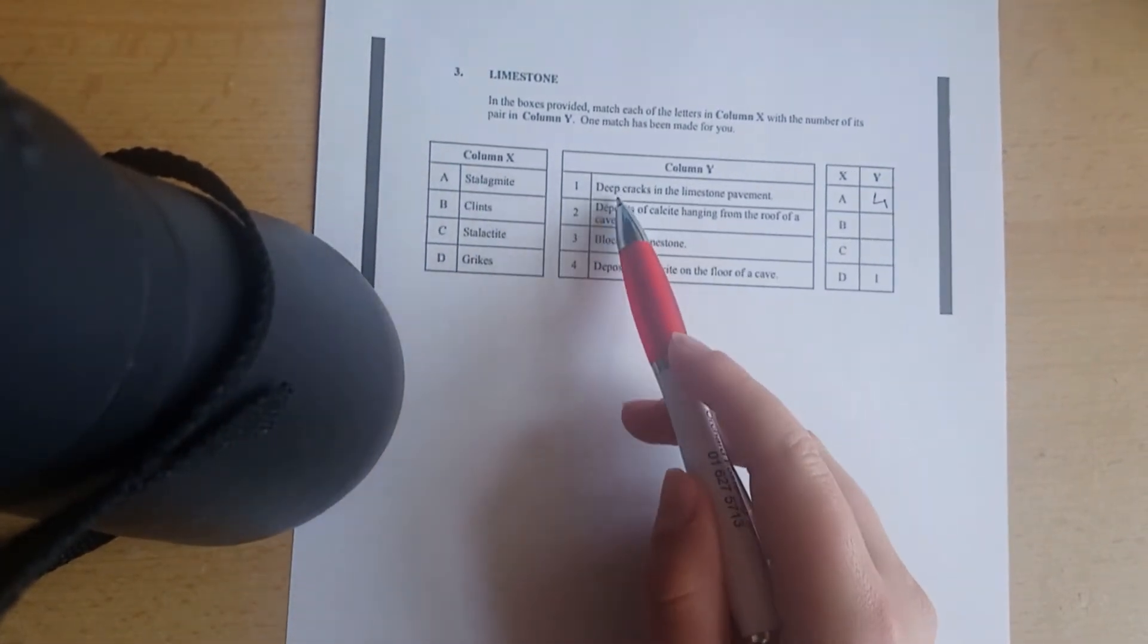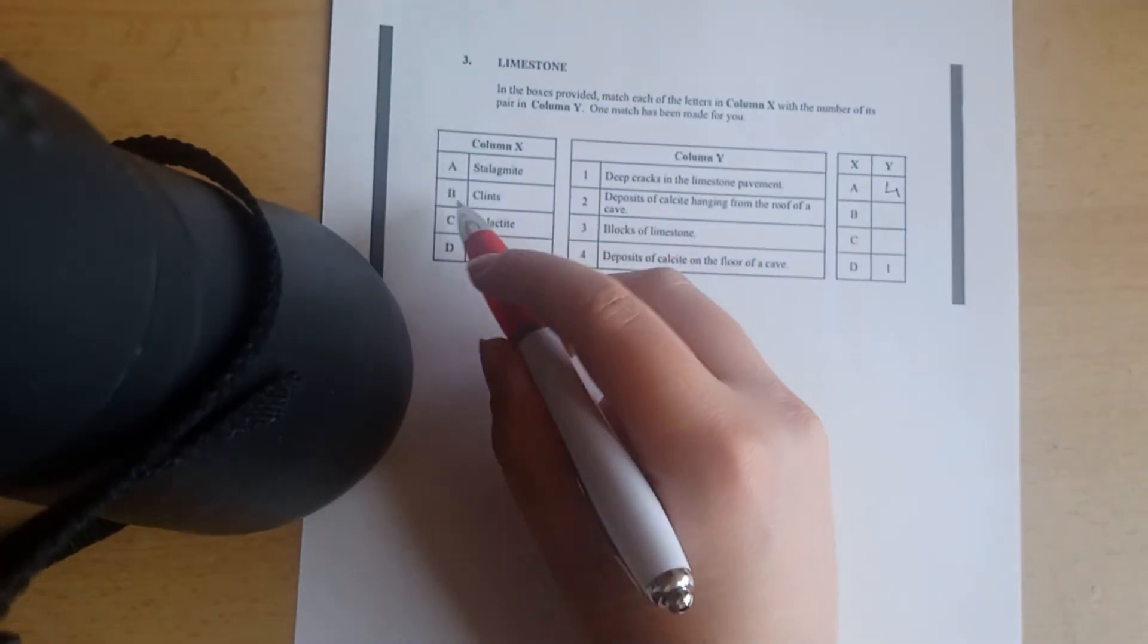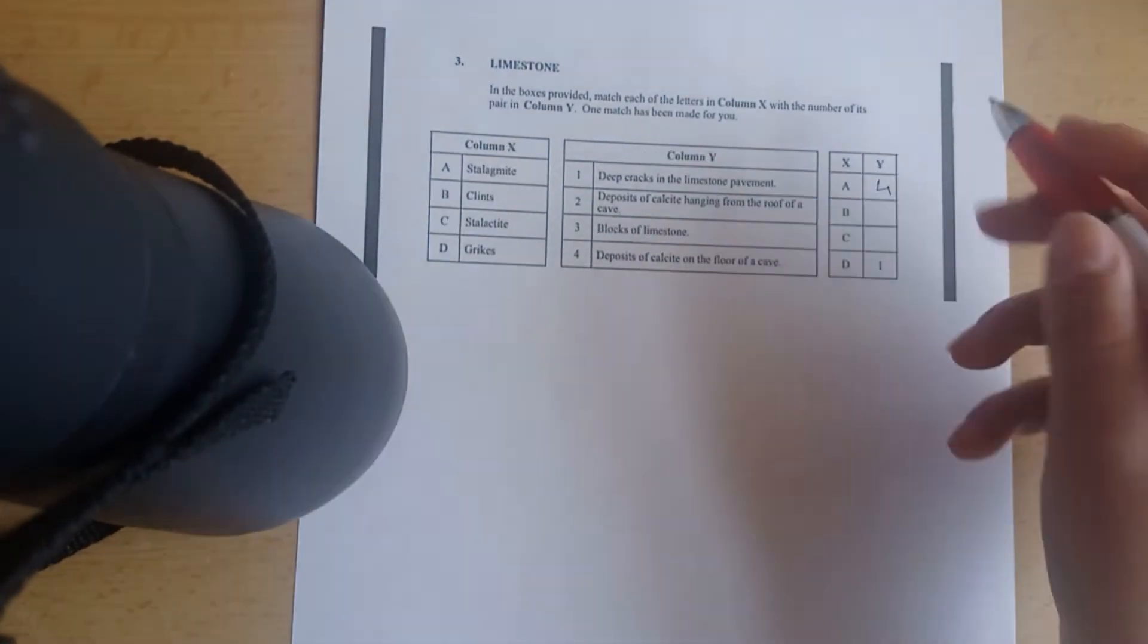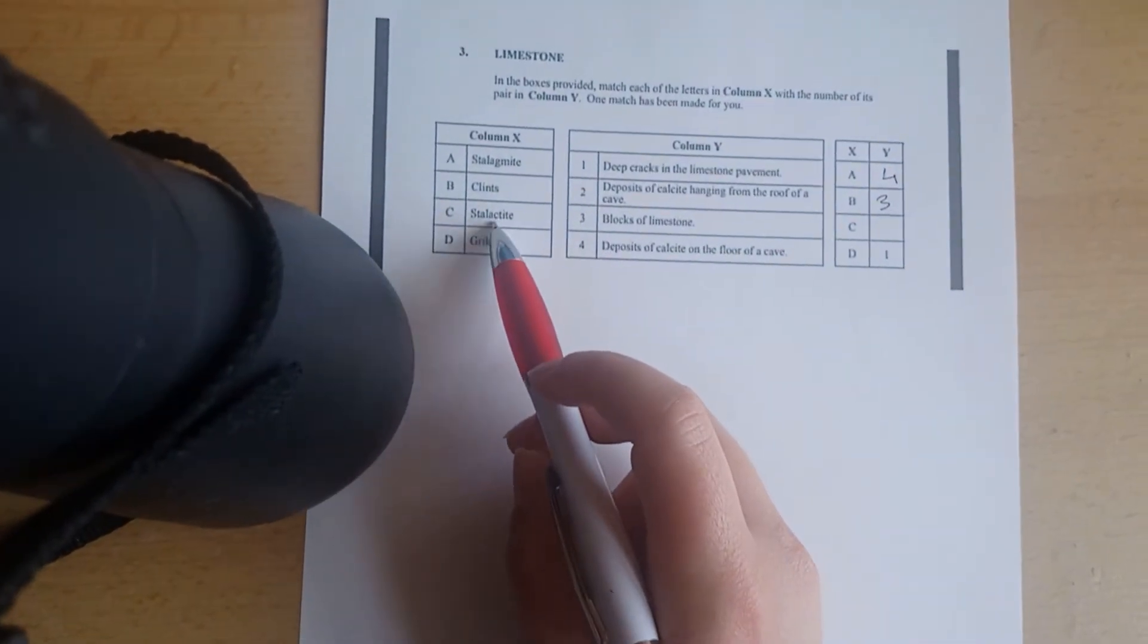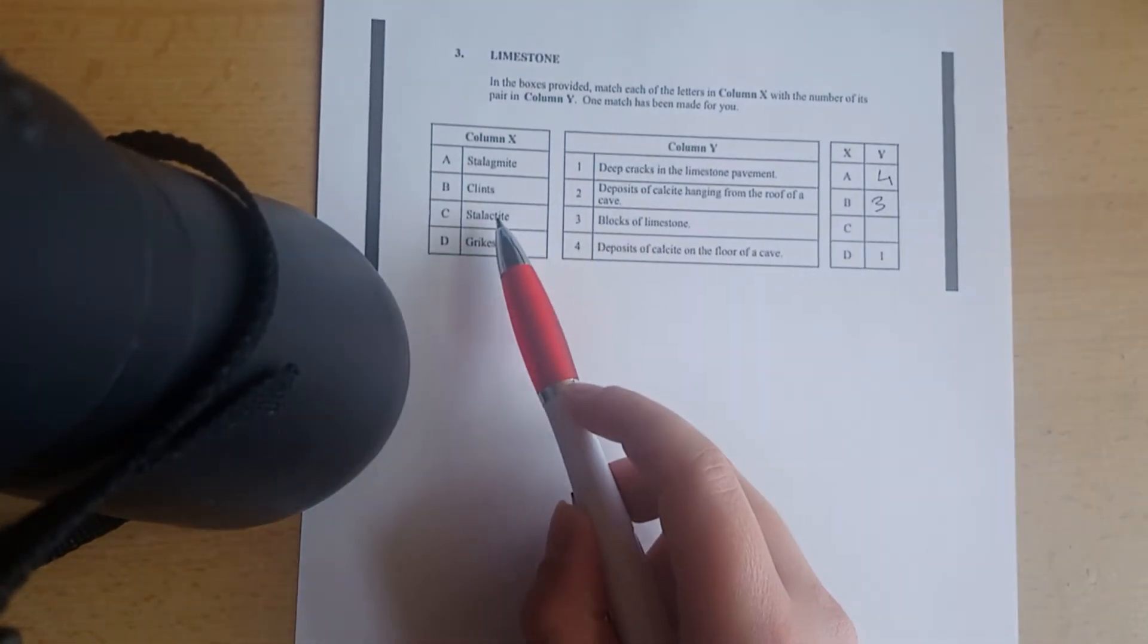Clints, B goes with three. And then we only have one answer left: stalactite, deposits of calcite hanging from the roof of the cave. So C stands for ceiling.